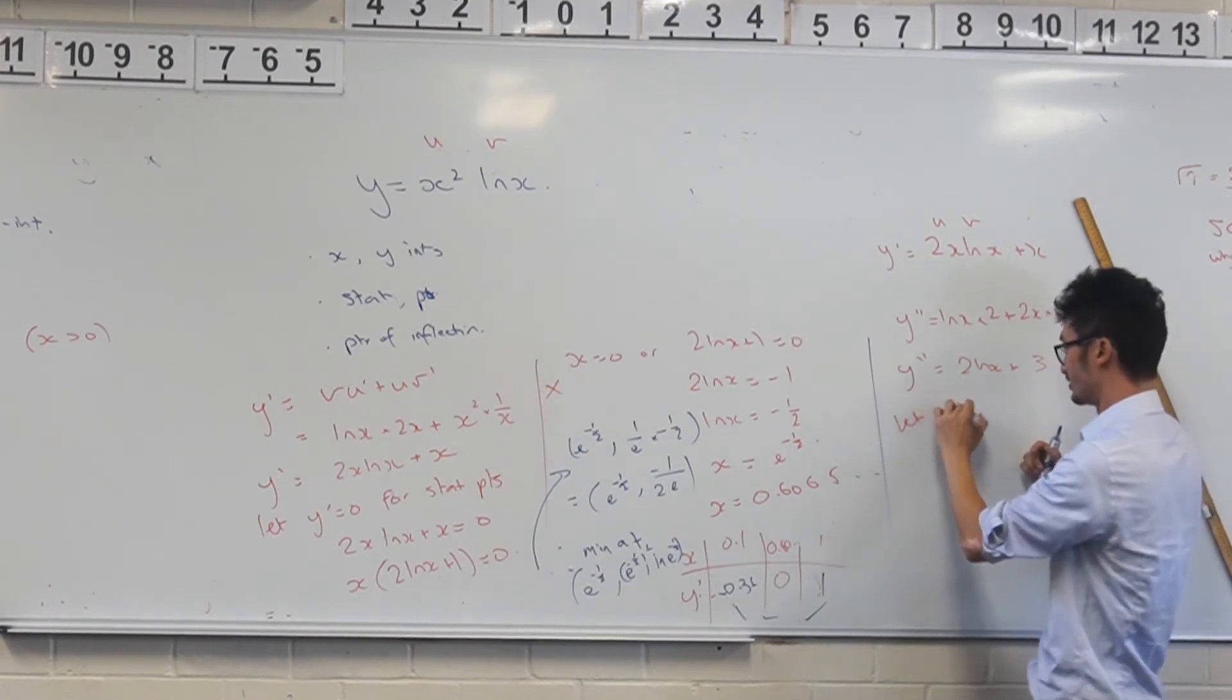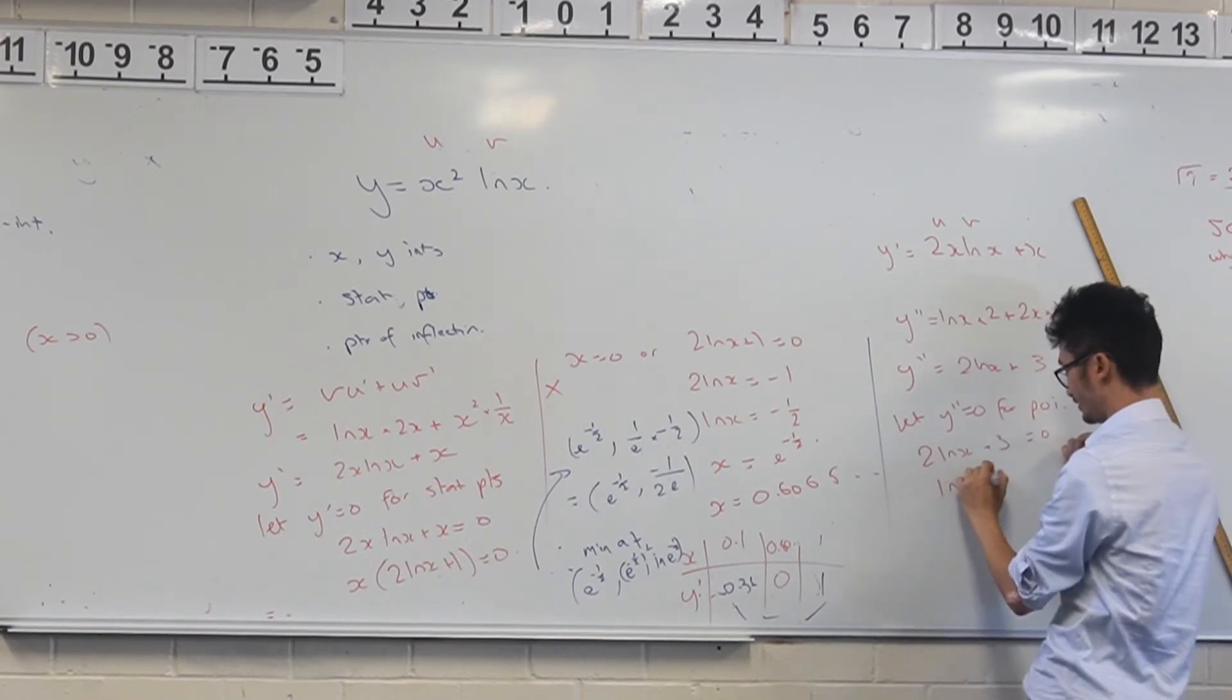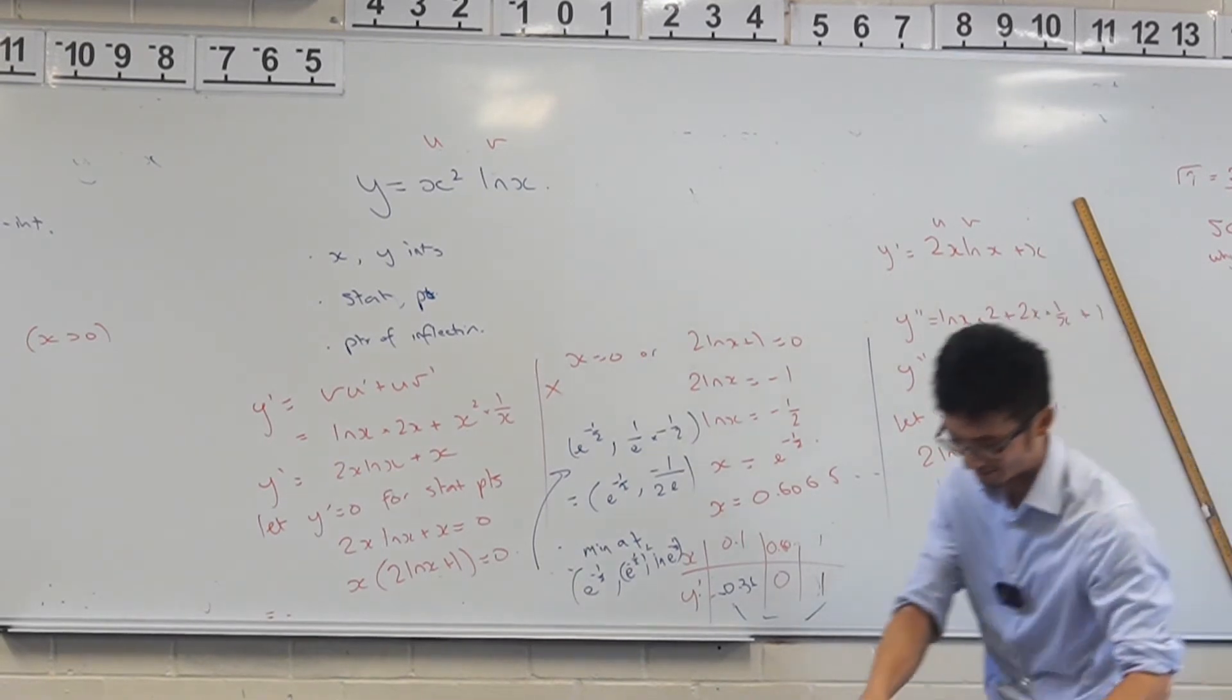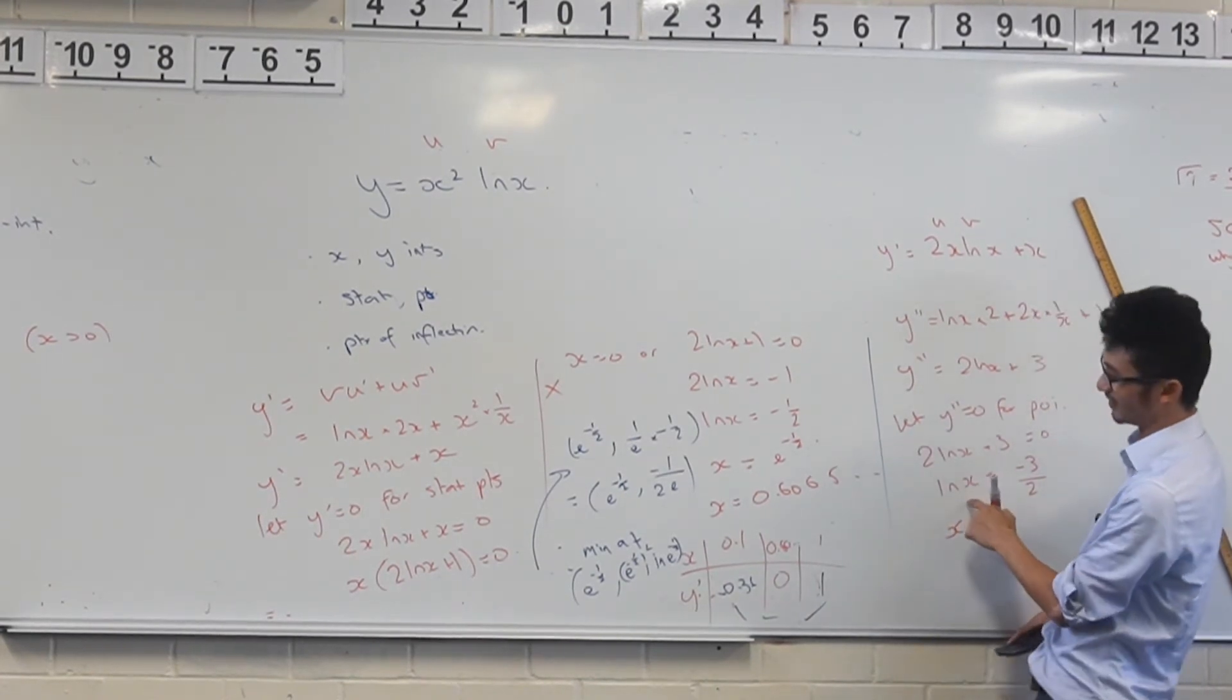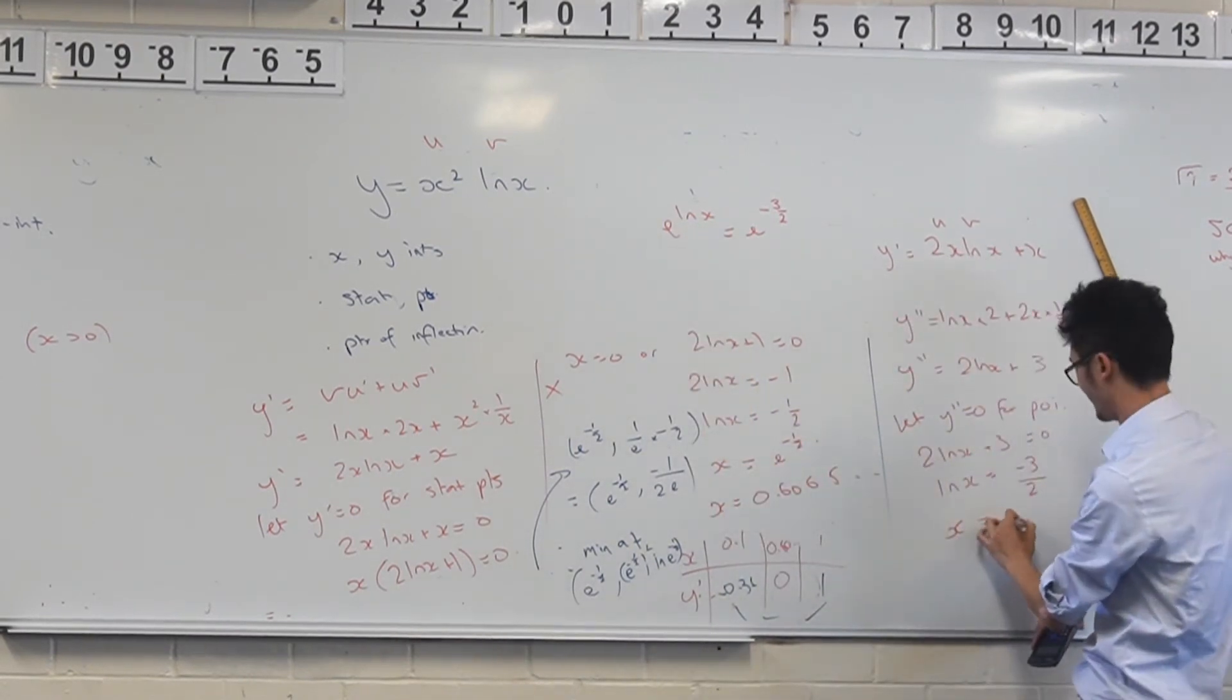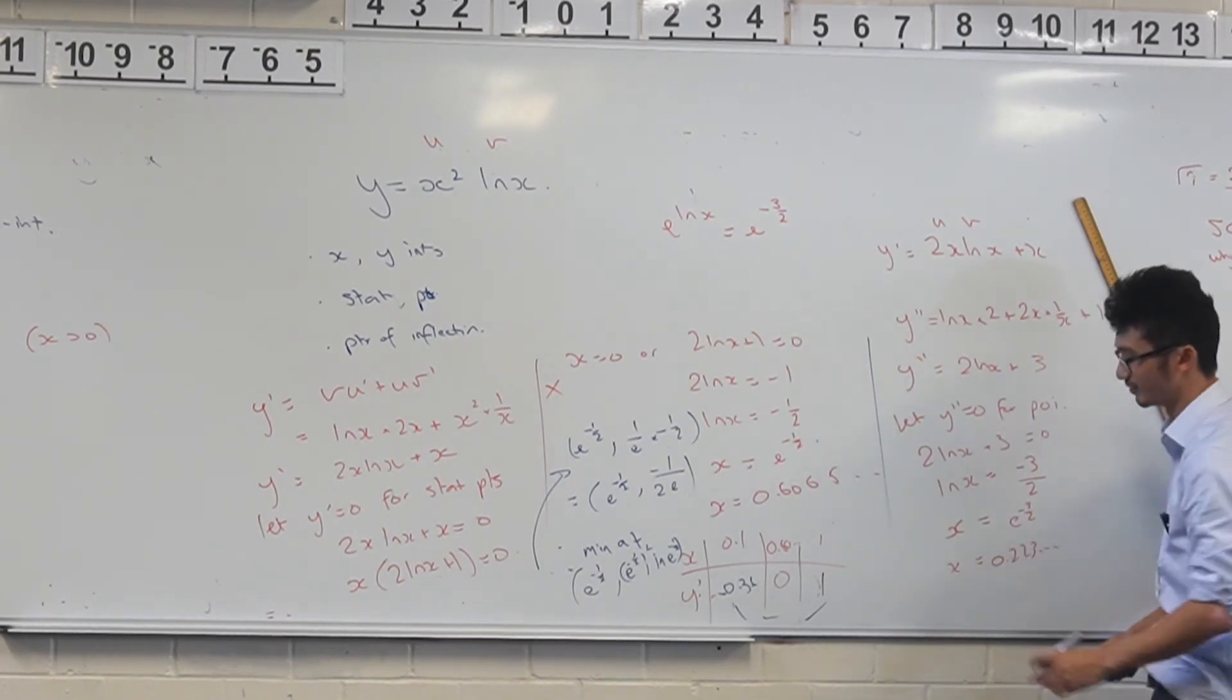And let y double dash equal to 0 for points of inflection. And so we're going to get 2 ln of x plus 3 equals 0. ln of x equals to negative 3 over 2. Again, not going to be the nicest answer. Raise both sides to base e. So you're going to get x is equal to... Just to clarify that, by the way, the reason why that works is because if you go e to the ln x equals to e to negative 3 over 2, this simplifies that to just x. That's why that works. So it's x equals e to the negative 3 over 2, which is... what is that? 0.2 something. That's going to be weird. Interesting.